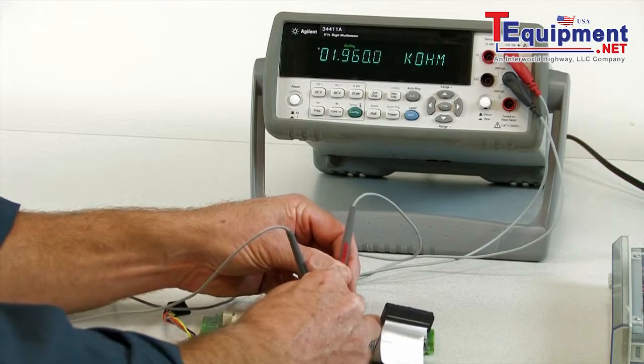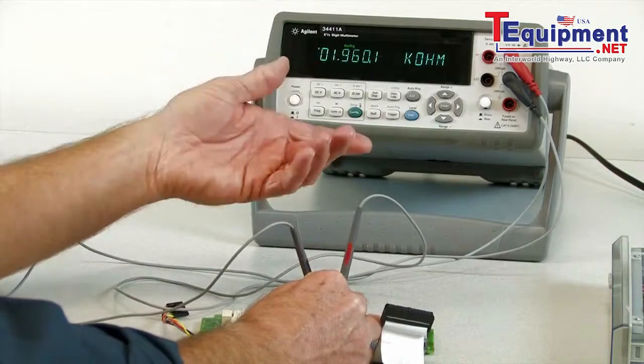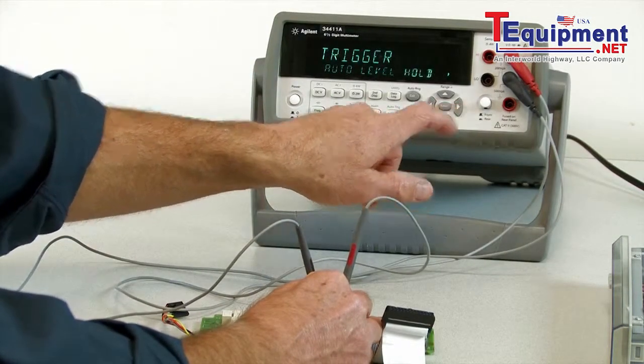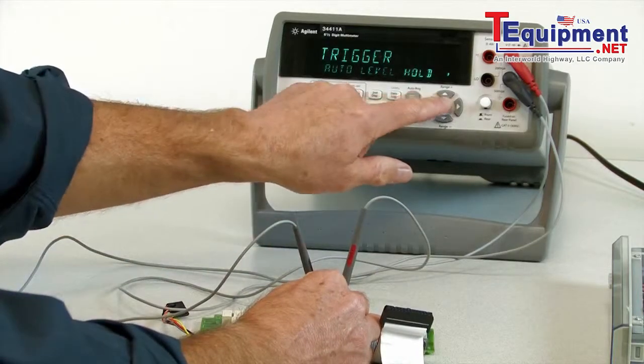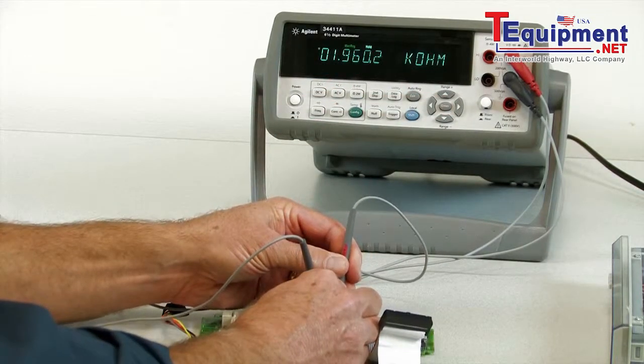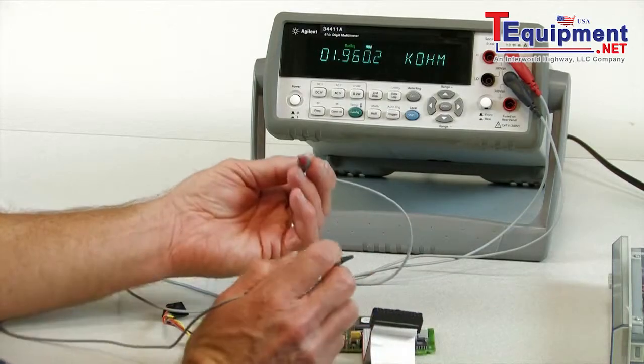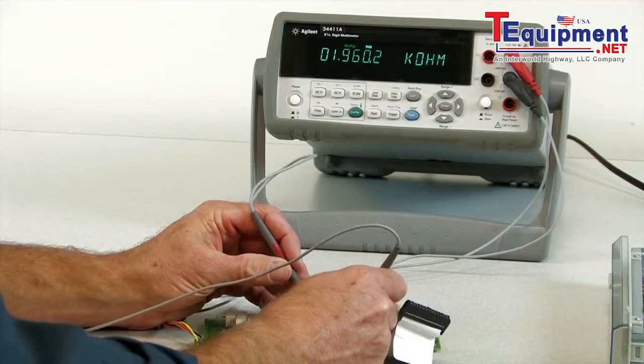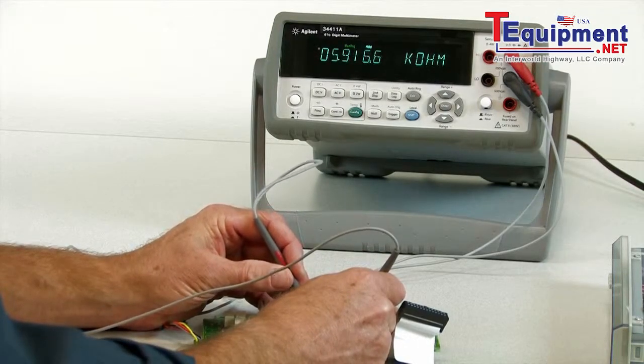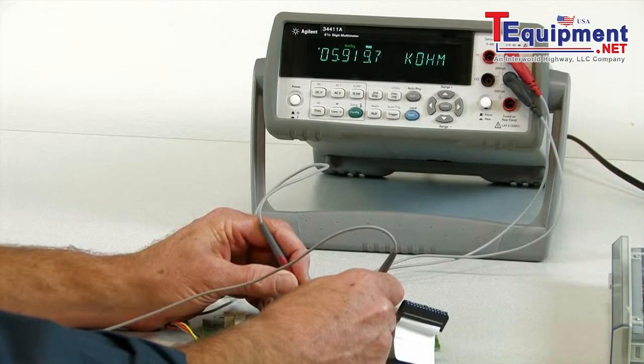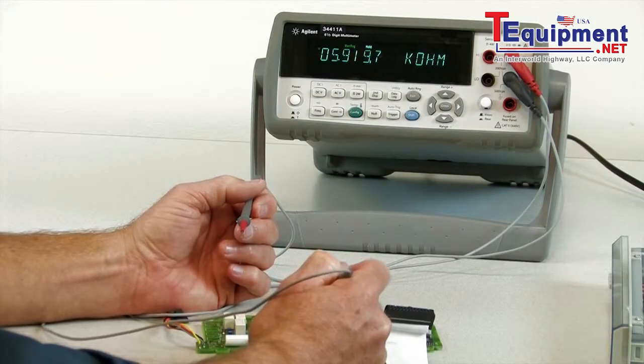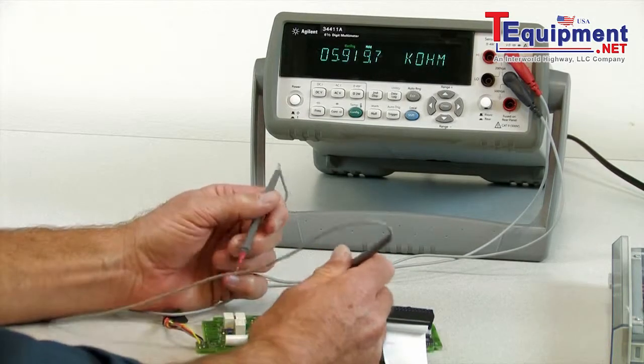Another nice feature of this product is it has a trigger hold feature. This allows you to make a measurement. So this is an approximately 2k ohm resistor, and then when I take my probes away, it will lock in on that reading until I measure another resistor. This one is the 6k ohm resistor, and once again the reading will lock in. That is another really nice feature of this multimeter.